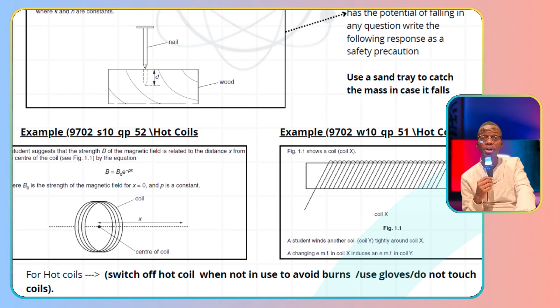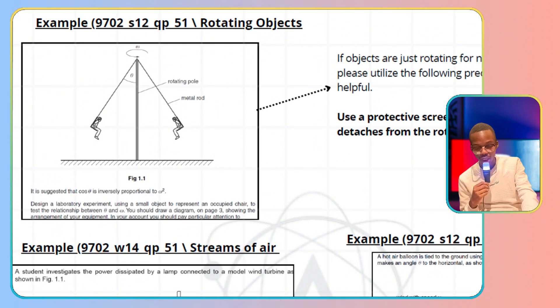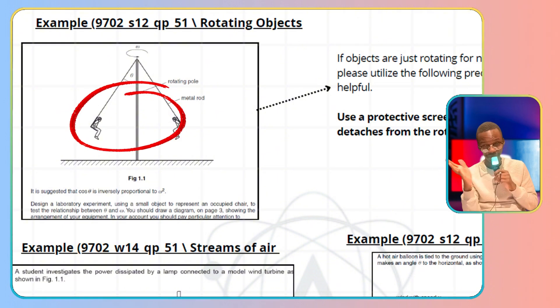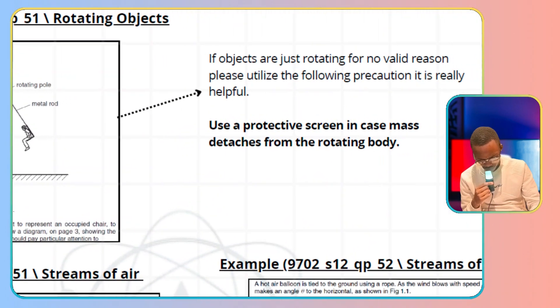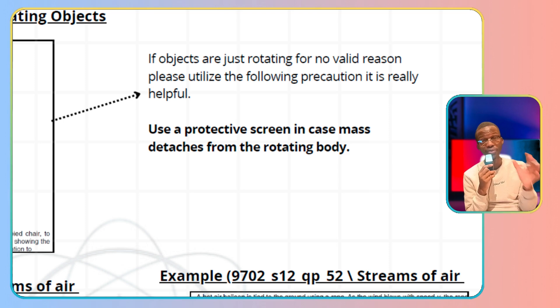Rotating objects. An example from May/June 2012 question paper 5-1: you're given objects in rotating motion. You compare the angle and angular speed. So if objects are rotating,